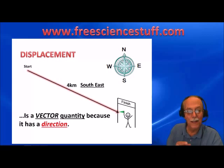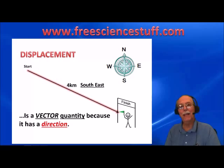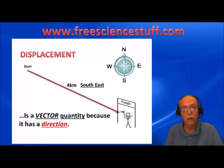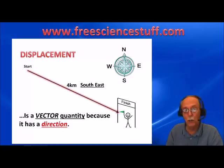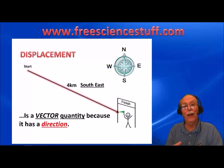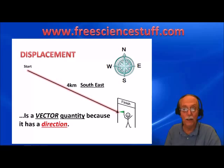Displacement is a vector quantity. A vector quantity is any measurement that has both a magnitude — a measurement — and a direction. Displacement is a vector because it has a straight line distance and also a direction, so it is a vector quantity.